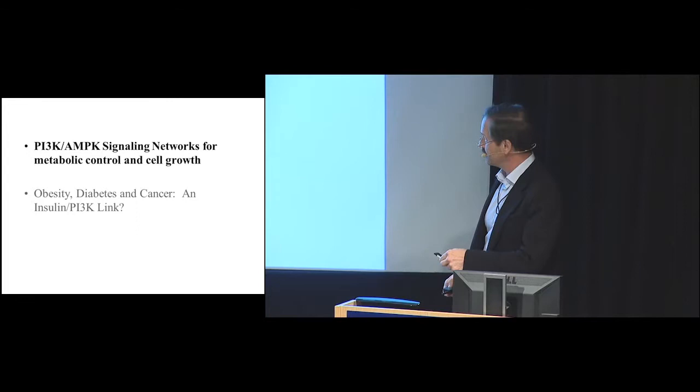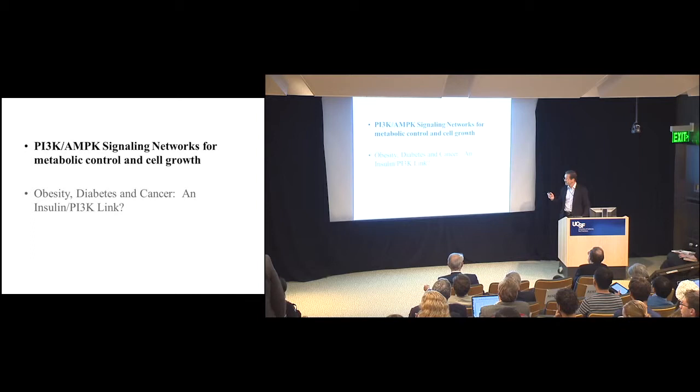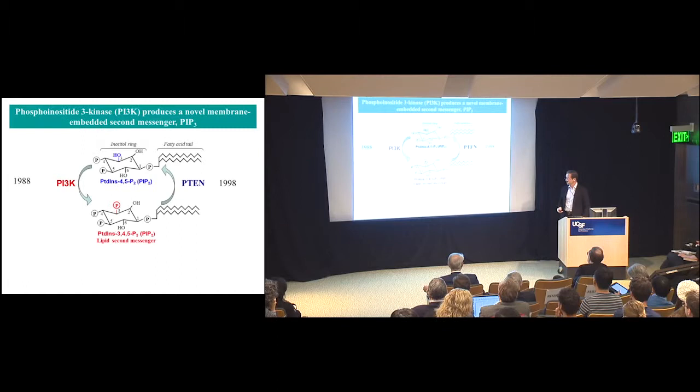And then many other postdocs and collaborators, John Blennis in particular, who really did a lot of the experiments that reveal the pathways that I'll be talking about today. So the talk will have two parts to it. The first, a bit about what PI3 kinase does, its connection with AMP-dependent protein kinase and control of metabolism. Then the second part will focus on the link between obesity, diabetes, and cancer, and how PI3 kinase might be involved.